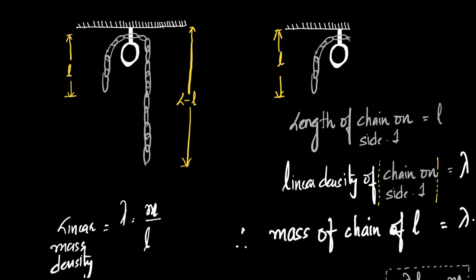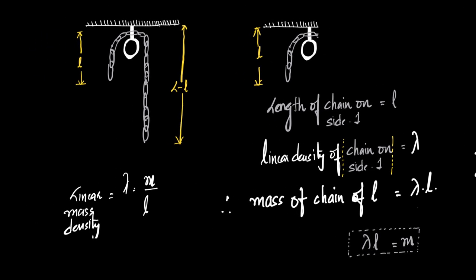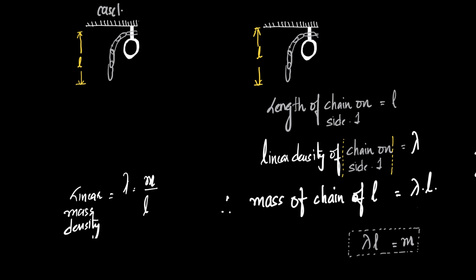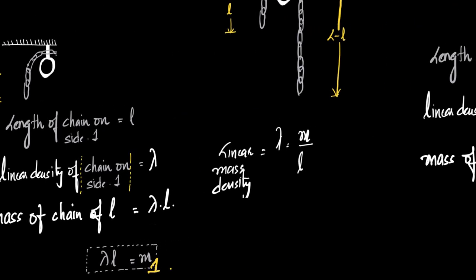Now let's see what we mean by the two halves. In case one, we look only at the length l and not the length L minus l — we don't consider the other half of the chain. We consider only the chain of length l. What is the length of this chain? It is l. What is the linear density? It is lambda. Therefore, the mass of the chain of length l equals lambda times l.